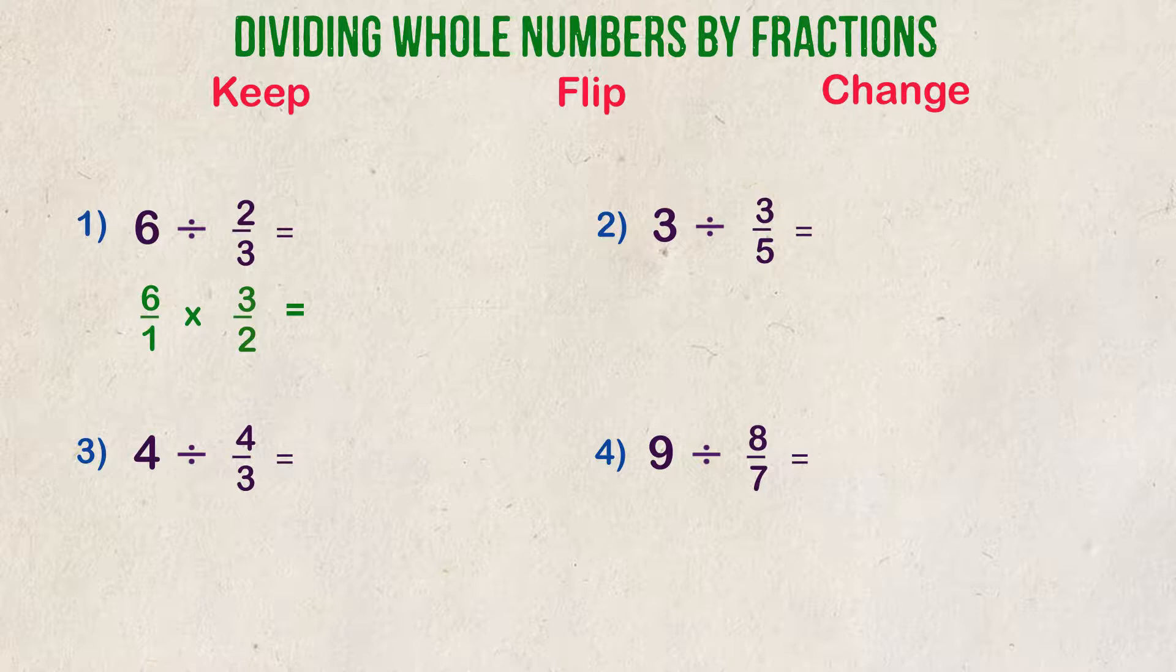You can solve it just like any other fraction multiplication problem. We multiply straight across. 6 times 3 is 18, and 1 times 2 is 2. 18 over 2 is the answer, which can be simplified down to 9, as 2 goes into 18 a total of 9 times.